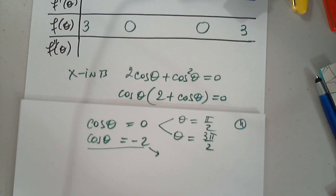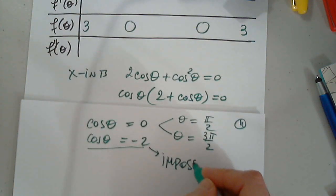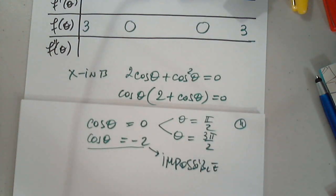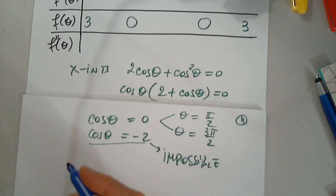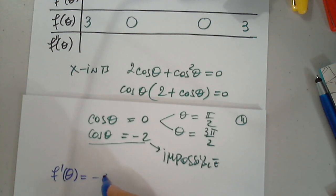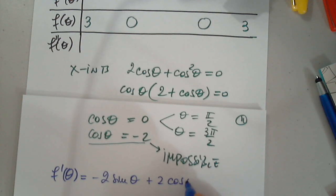Of course there are no solutions for cosine theta equals negative two, because it's impossible. What is the minimum possible value for cosine? Negative one. What is the maximum possible value for cosine? One. That's it. So now F prime is negative two sine theta plus two cosine theta times negative sine theta.